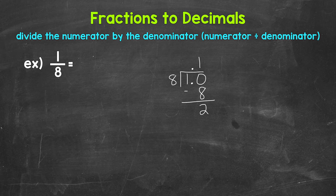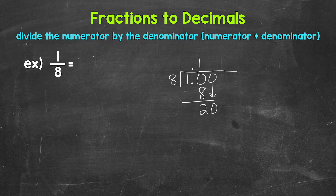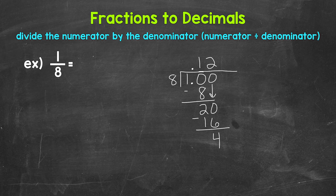We don't have a clean cut 0 at the bottom, so we need to continue on by using another 0 that we can bring down. I'm going to extend the division bar here. Now we have 20. 20 divided by 8 — how many whole groups of 8 in 20? Well, 2 — that gets us to 16. Multiply: 2 times 8 is 16. Subtract: 20 minus 16 is 4. So we don't have that clean cut 0 yet.